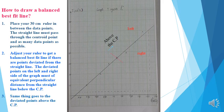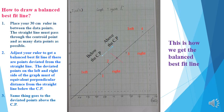Step 3: The same applies to the deviated points above the centric point. The deviated perpendicular distance of data point 3 on the right side is almost the same as the deviated perpendicular distance of data point 4 on the left side. Above the centric point, data point 3 balances data point 4. This is how we get the balanced best fit line.